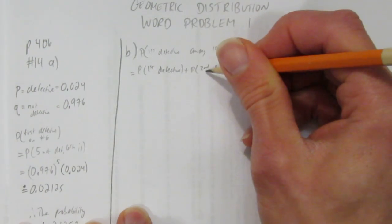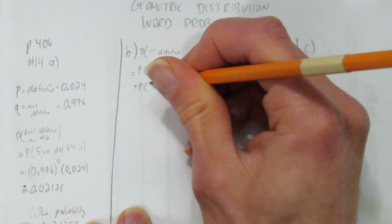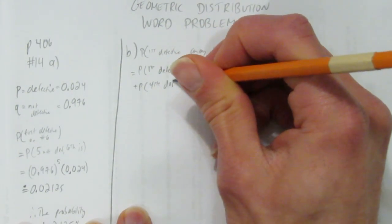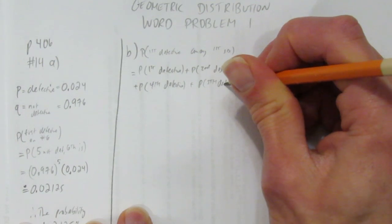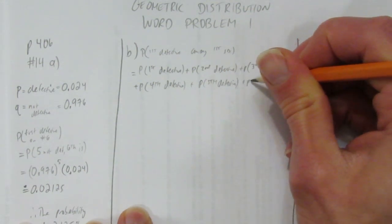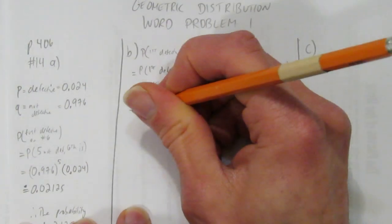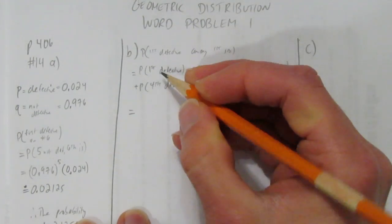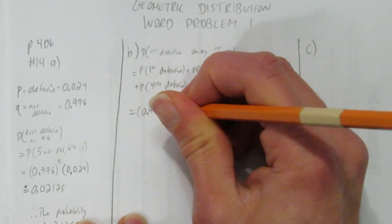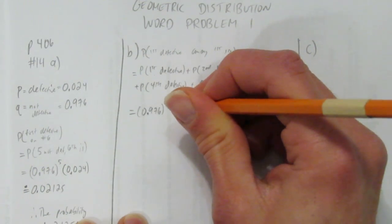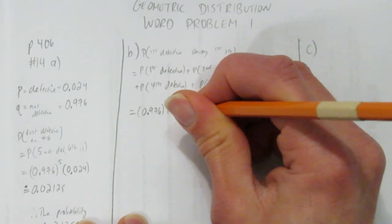The first defective is the first one, the first defective is the second one, the first defective is the third one, the first defective is the fourth one, the first defective is the fifth one, and the first time we get a defective is the sixth time. A lot of things to add together. It's easy work, but we've got to do a lot of things. What's the probability that the first thing is defective? That's the probability of having no non-defectives, you have no not-defectives, your first one's defective.